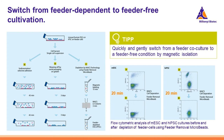For example, you can see here the flow analysis of PSC cultures before and after removal of feeder cells. Not only can you obtain a highly pure population of pluripotent stem cells, but the whole procedure takes just about 20 minutes.